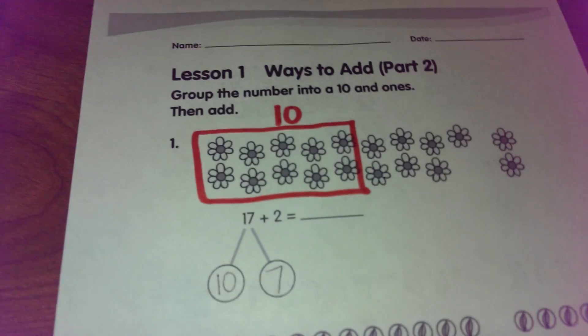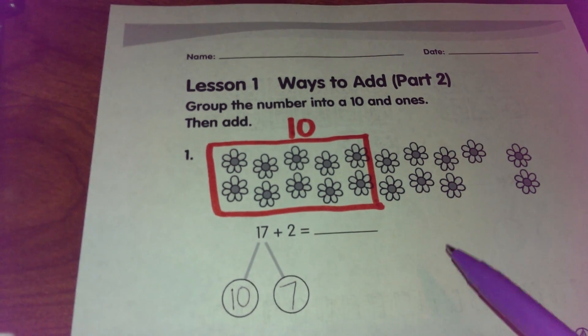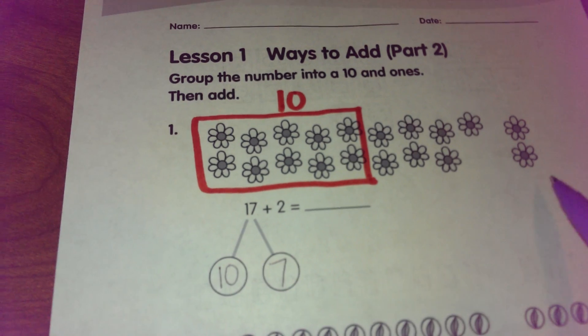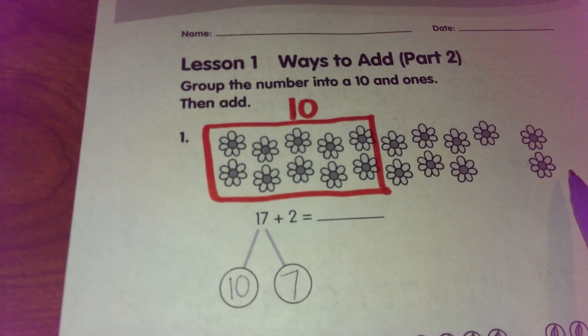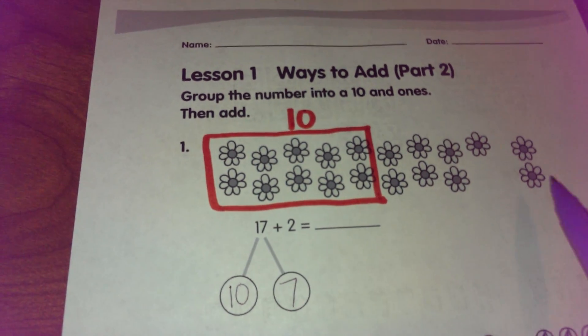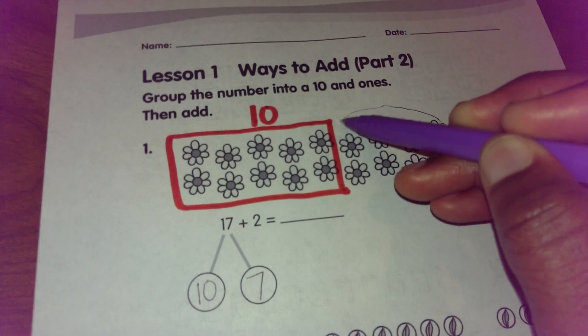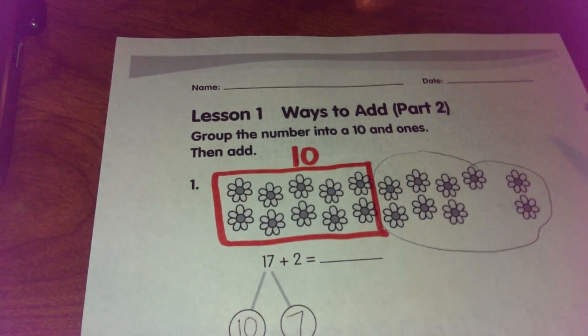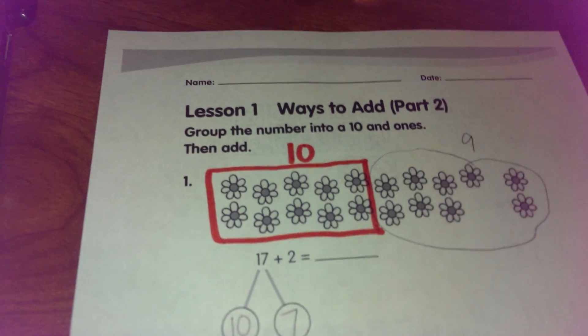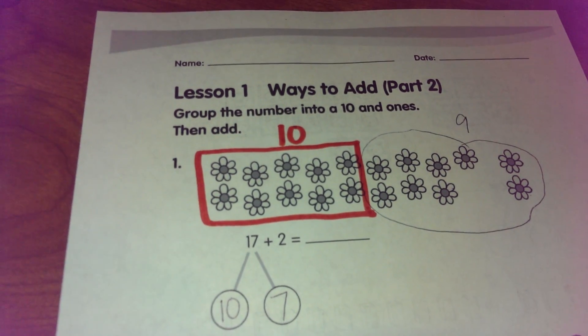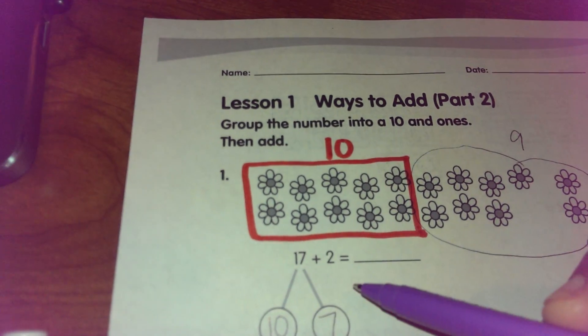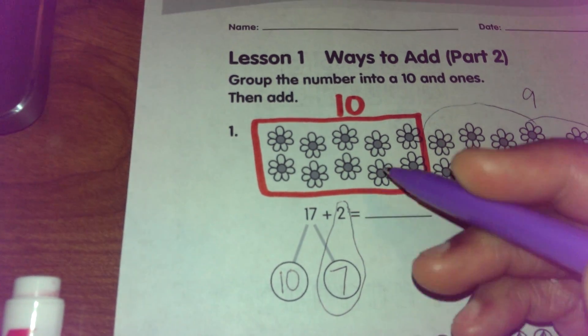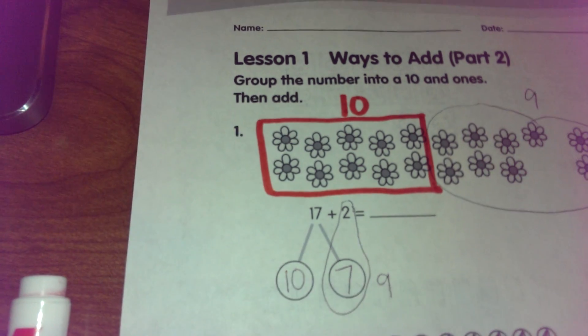Now what I want to do next is put my leftovers or my ones together because that's not quite enough to make ten. I know there's seven here and two here. When I put seven and two together I can count on: seven, eight, nine. There's just going to be nine here. So over to my number bond, I put two and seven together and that's going to give me nine.